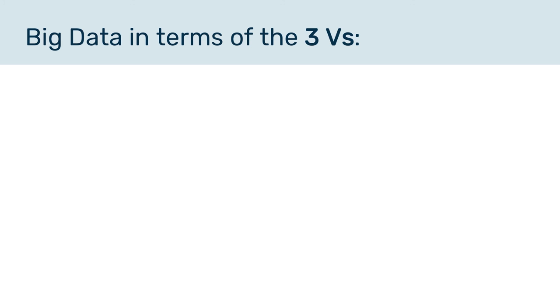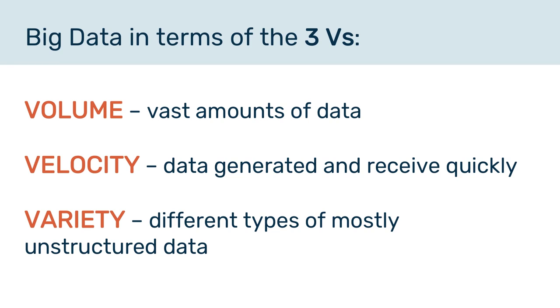So that's it for the big data topic. Hopefully you've not found it too bad, though it's probably one of the trickier topics simply because it ties into something called functional programming. Let's have a quick recap of the three V's: we have volume, which is to do with vast amounts of data; we have velocity, where data is generated and received quickly; and finally we have variety, where we have different types of mostly unstructured data. Thank you for watching.